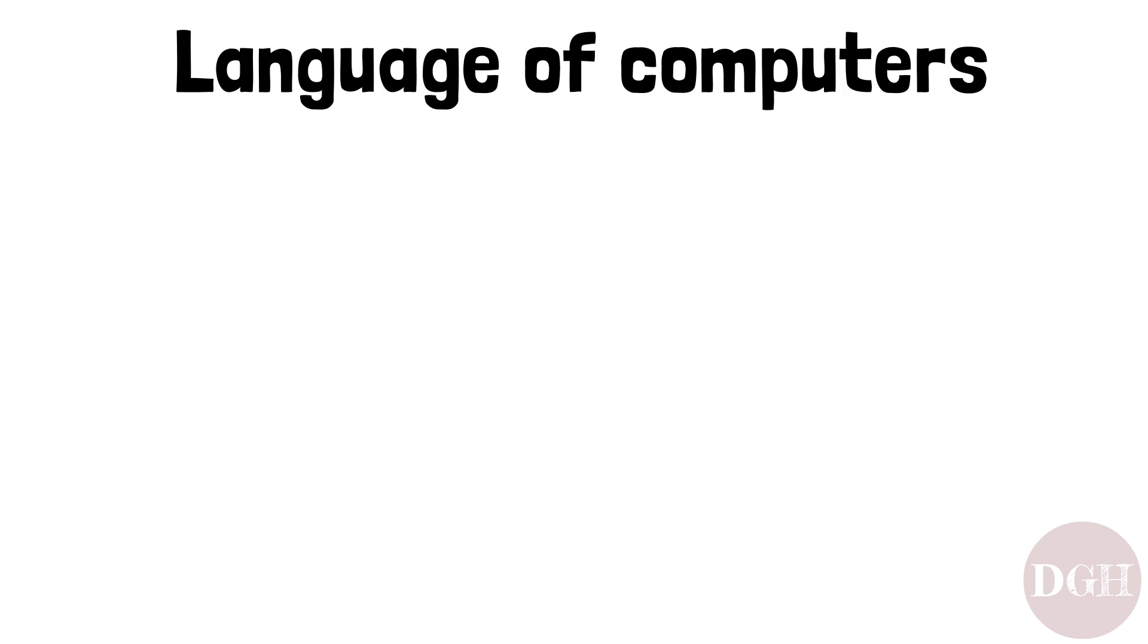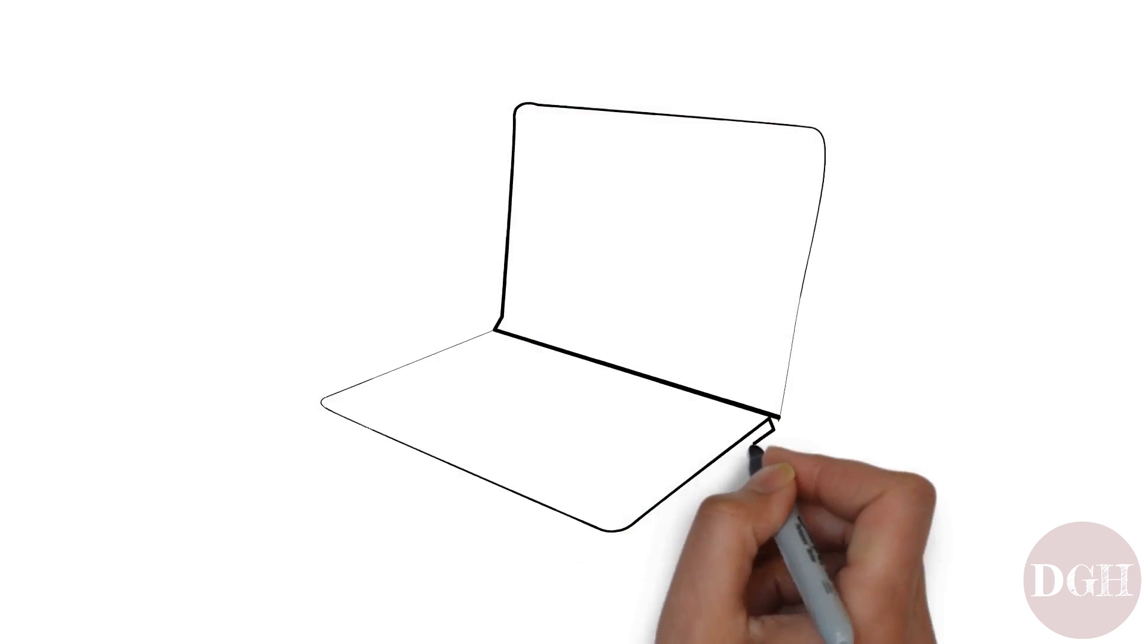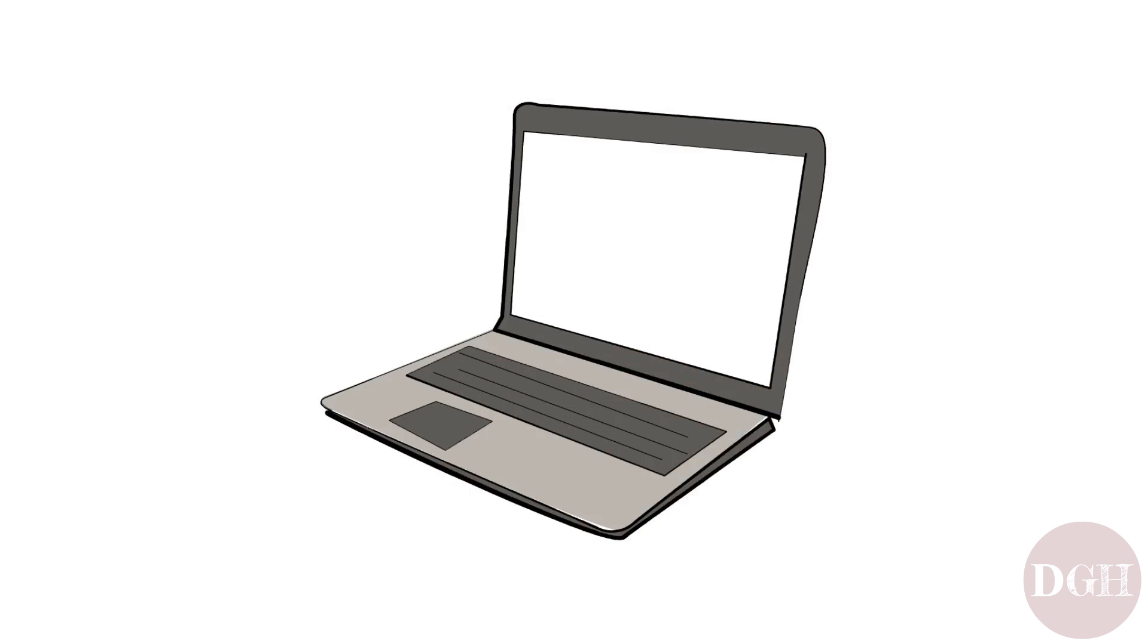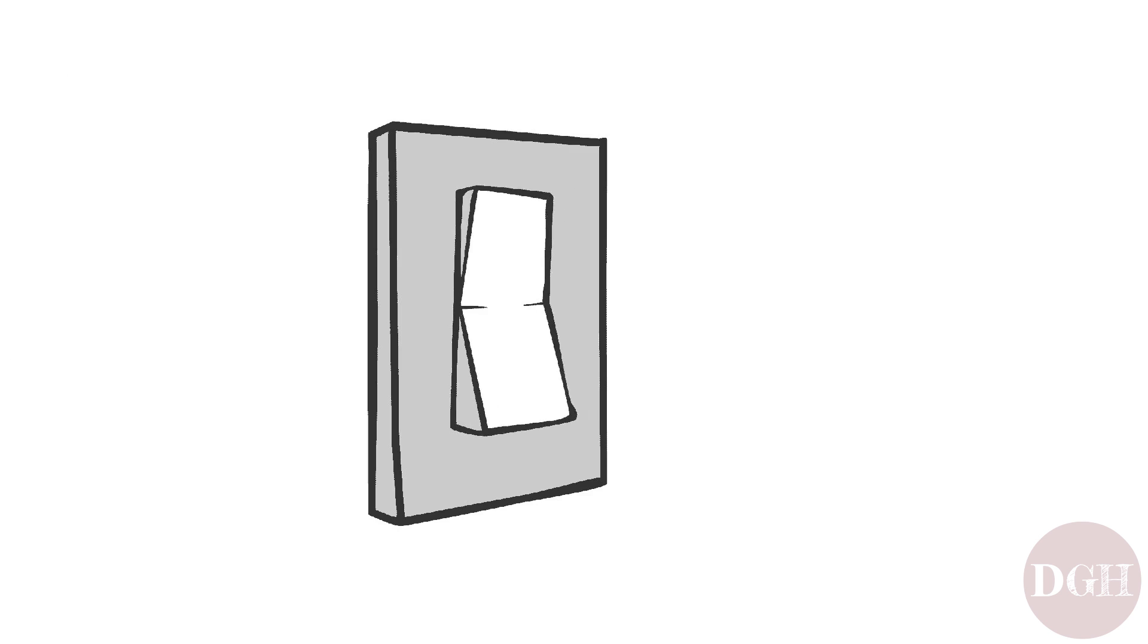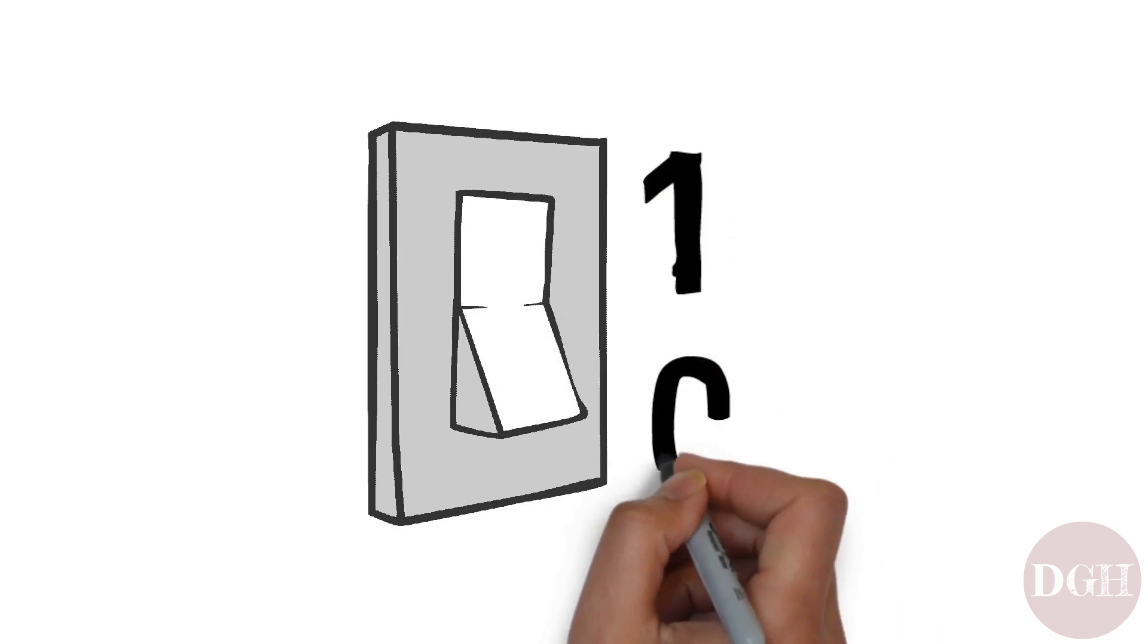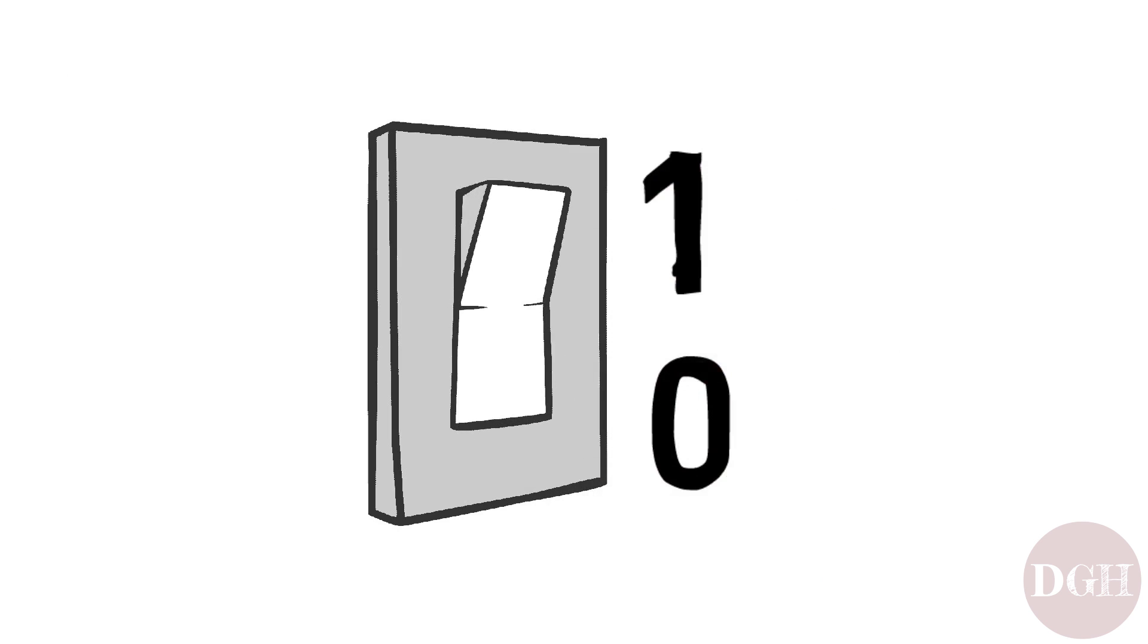Welcome to this presentation about the language of computers. The first thing to know is that in the most fundamental sense, computers really only understand two things: on and off, which in computer language are represented by the numbers one and zero. This language, made up of just ones and zeros, is called binary.